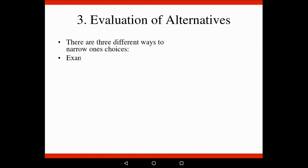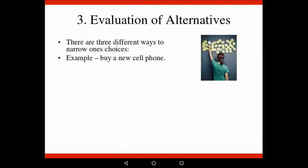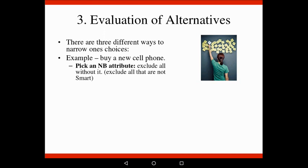There are three different ways to narrow one's choices. For example, if you had to buy a new cell phone, the first one is to pick an attribute - you pick one attribute that you really like, such as needing a big screen, and then exclude all the others that don't have it. So all cell phones with a small screen you won't even look at. For example, you're only going to look at smartphones.